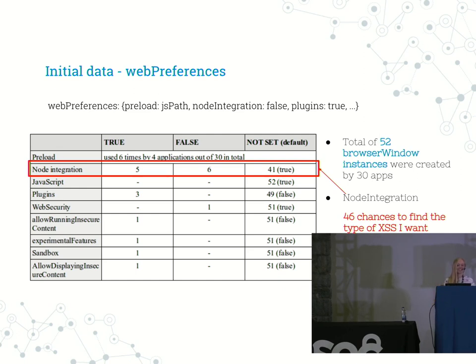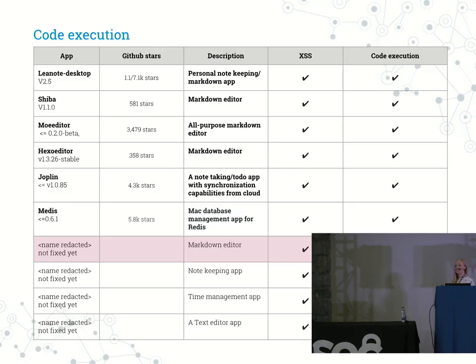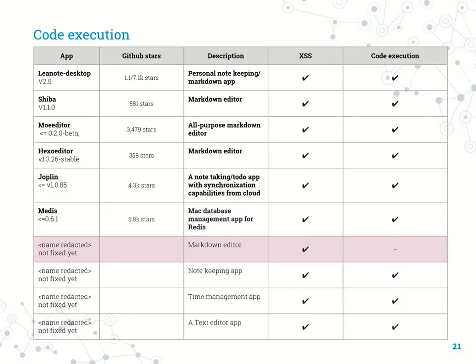So what are the odds of finding at least one? I ended up with 10. The funny part is that the most popular Electron-based applications are either markdown editors or note-keeping applications — I guess we have a lot of notes to keep. Here's a golden rule: go to the Electron applications official page, pick one, try this, and you're going to have code execution.